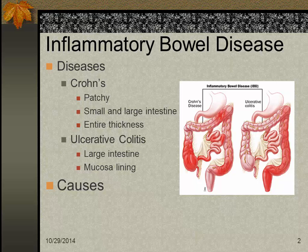Crohn's disease involves patchy inflammatory lesions called skip lesions, located in the small and large intestine, particularly the distal ileum. The entire thickness of the bowel is affected — so it can be anywhere, and the big difference is it goes through that entire thickness, which is not good.